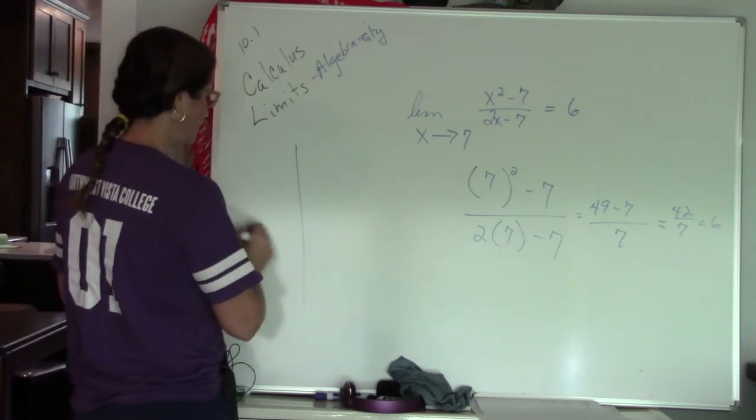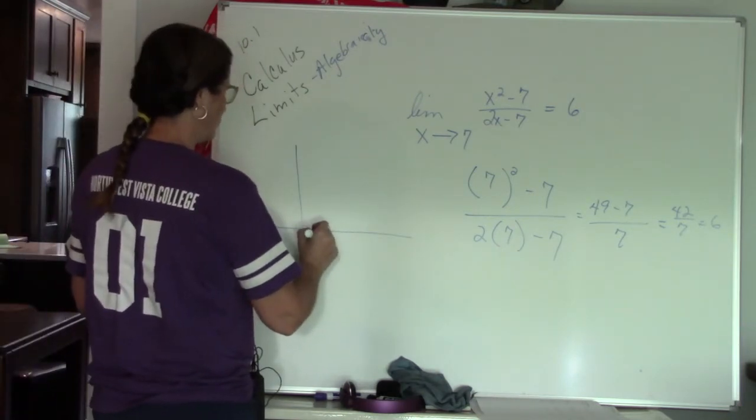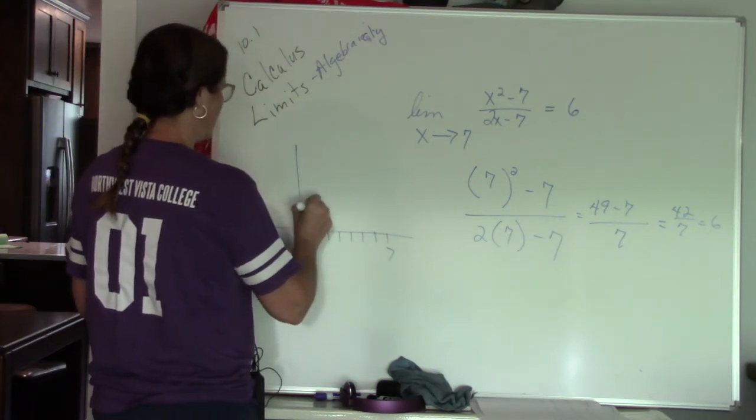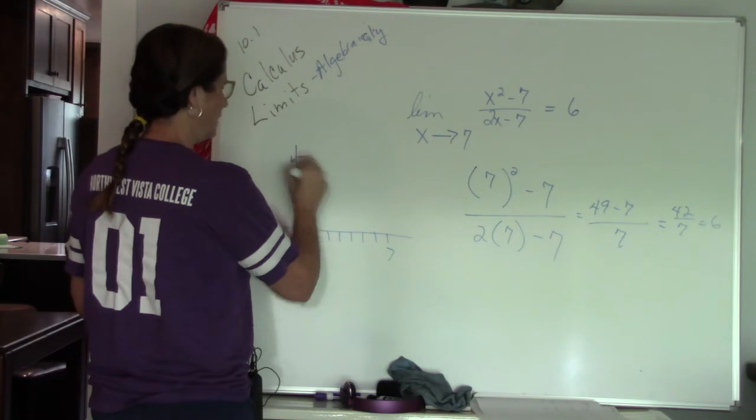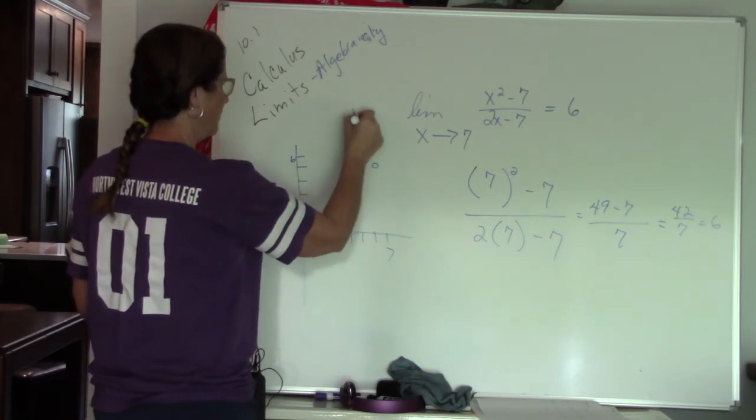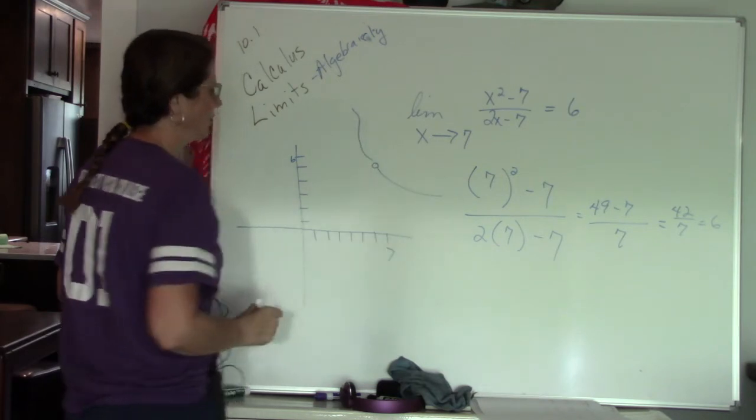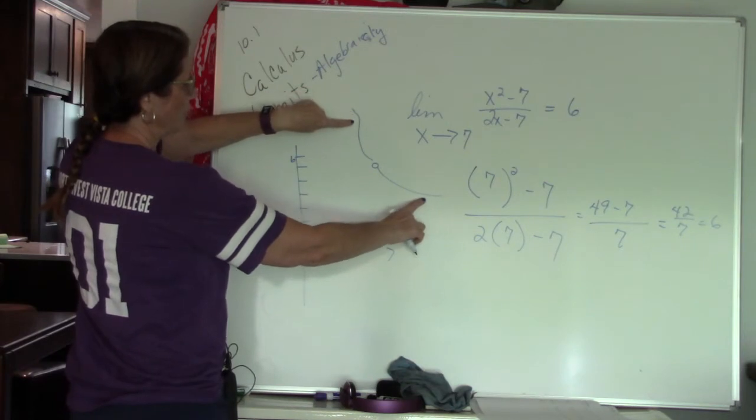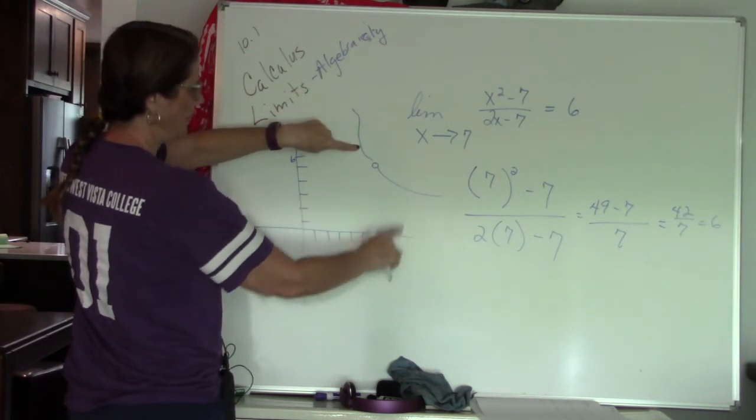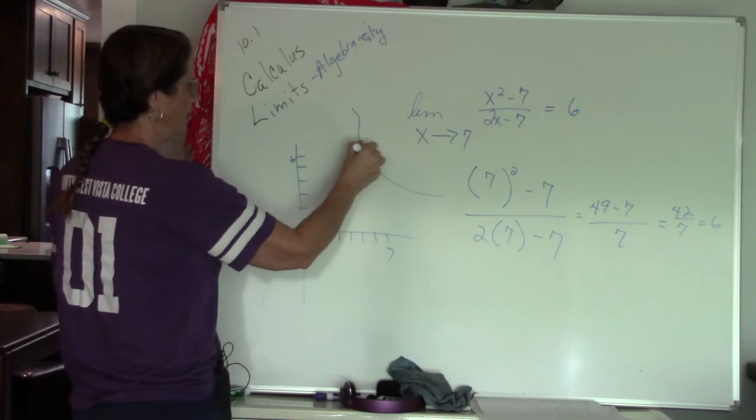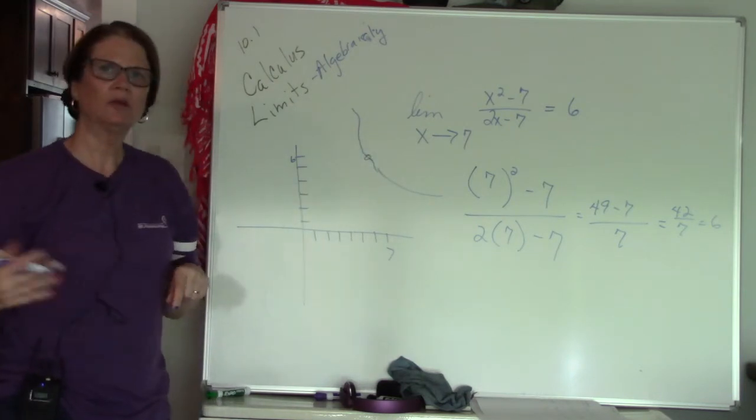So graphically, this is kind of what it looks like. So if I had 1, 2, 3, 4, 5, 6, 7, 1, 2, 3, 4, 5, 6, I'd have something going on here. So I don't know, it would be something like maybe like this. So what's happening is my fingers are coming together at x equals 7 at the value. Oh, it used to be up higher. At the value y equals 6.